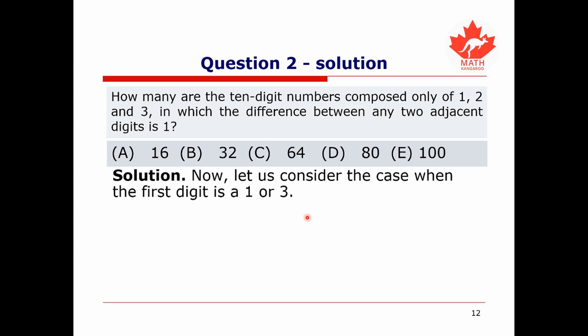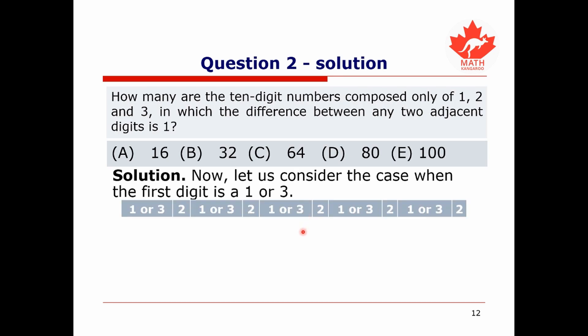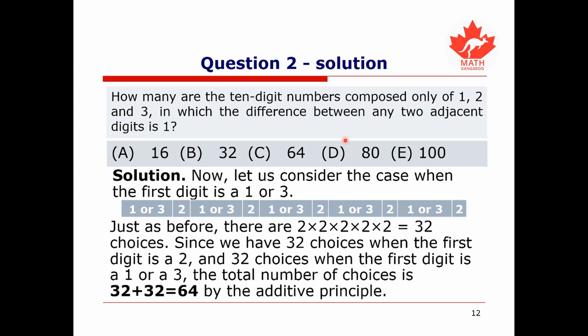Next, we consider the case where the first digit is not 2 but a 1 or a 3. We get a very similar picture: the first digit is 1 or 3, followed by a 2, and the same repeating pattern. We again find 2 to the power of 5 equals 32 different such numbers. Using the additive principle, 32 plus 32 gives 64 different possible numbers.